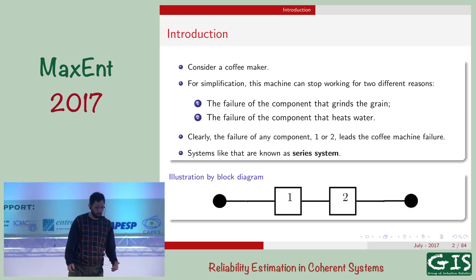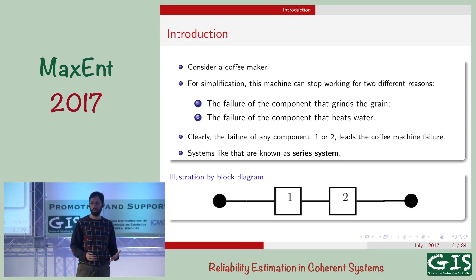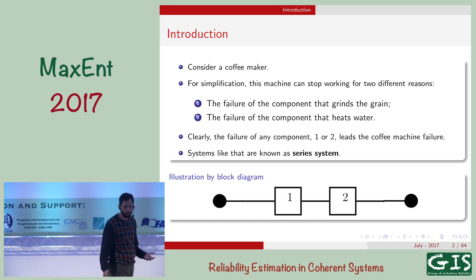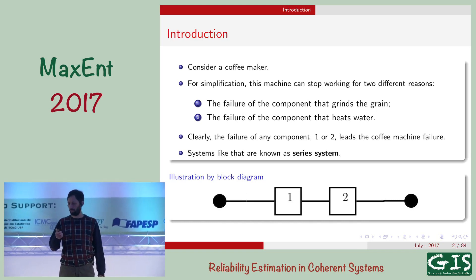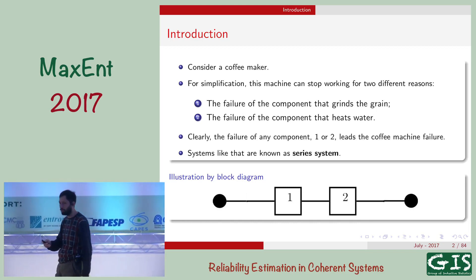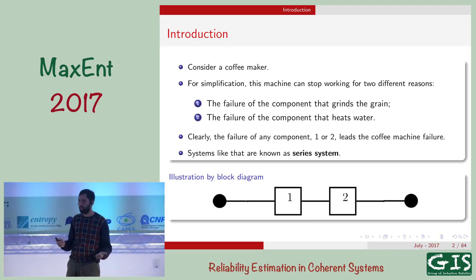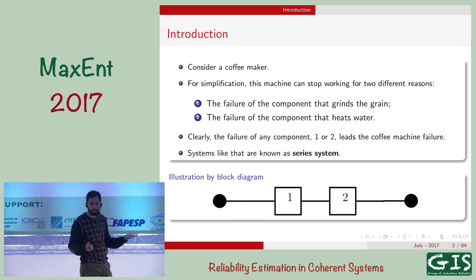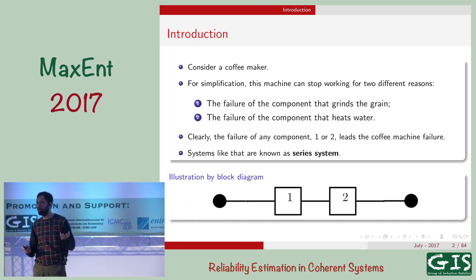Based on that, we will start with a simple toy example to understand what we are talking about. Consider that we have a coffee machine — a really simple one. Why really simple? Because there are many components in a coffee machine, but here we are considering only two components: the grinder and the heating system to heat the water.